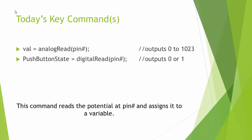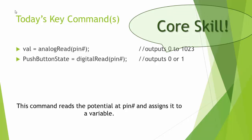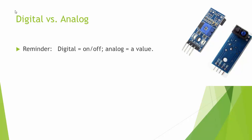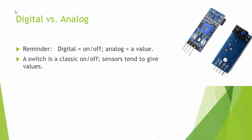Either way, these commands read the potential at the pin and assign the result to a variable — either a number between 0 and 1023 for analog, or a number between 0 and 1 for digital. Various sensors will be either digital or analog. We're going to see today how to take what amounts to an analog sensor and turn its result into a digital output.